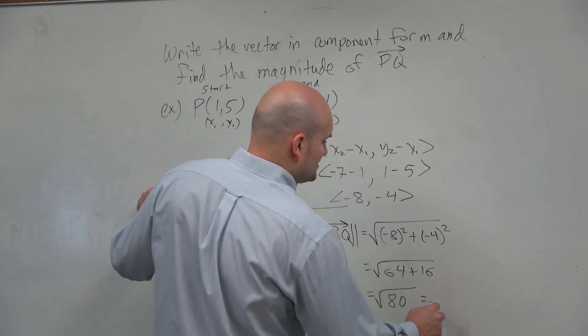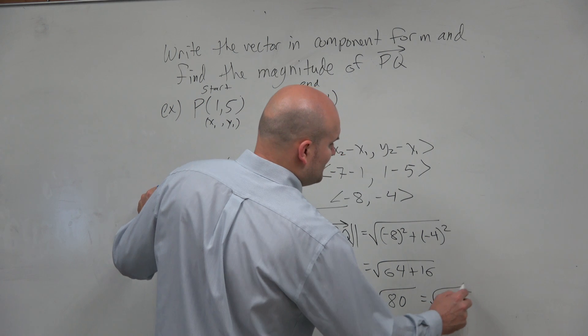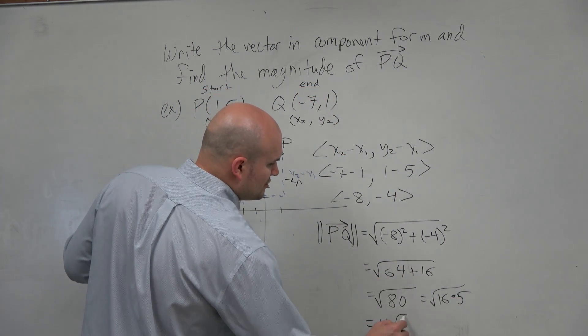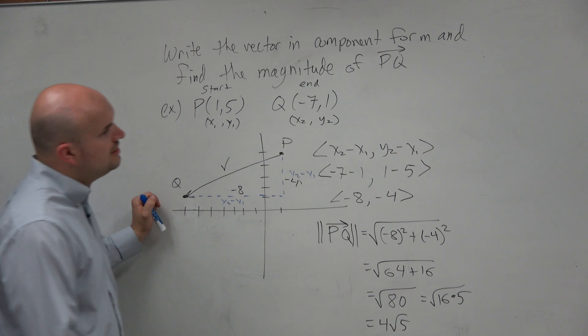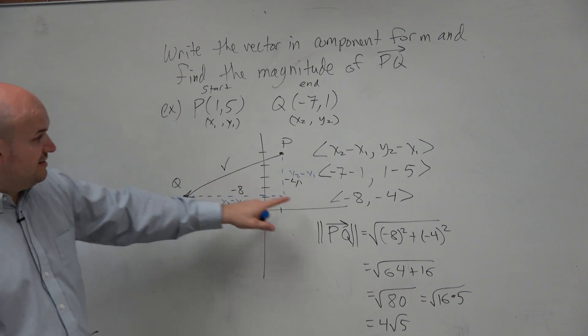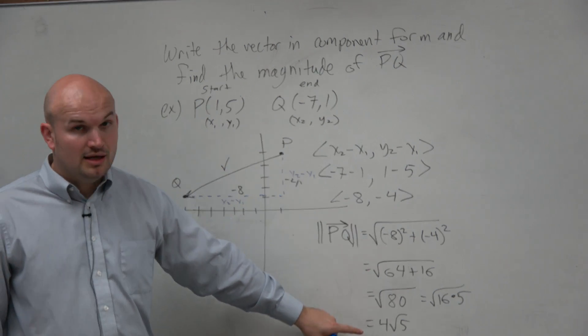So that's the same thing as square root of 16 times 5. Square root of 16 is 4, square root of 5. So there you go, ladies and gentlemen. That is how you find the component form as well as the magnitude.